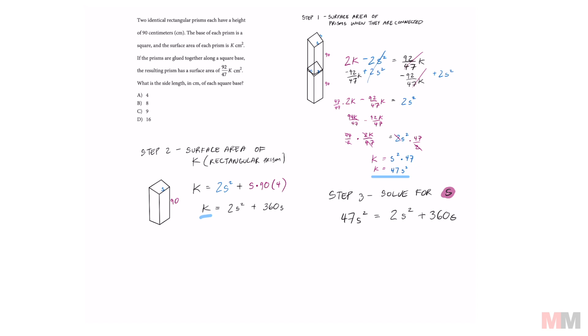From here, it's just a simple factoring problem where you subtract 2S squared, and we might as well subtract 360S to equal that to zero. Solve for S by factoring S out, and we're left with 45S minus 360 equals zero.